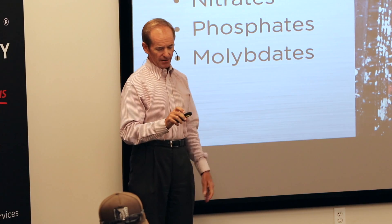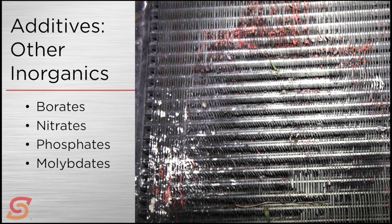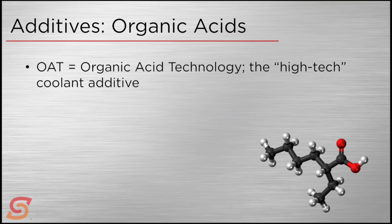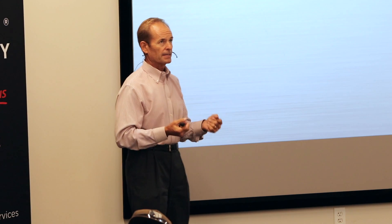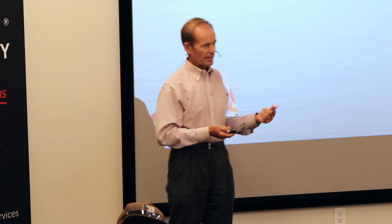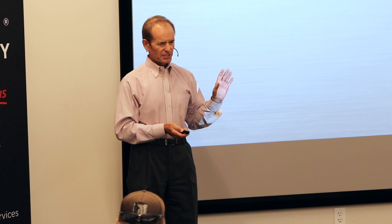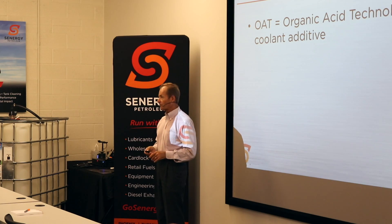The next additive category is organic acids — OAT, short for Organic Acid Technology. OAT is used in antifreezes also referred to as Extended Life Coolants or ELCs, so ELCs and OATs are synonymous. It's the high-tech coolant additive; they've been around a couple of decades, which in the antifreeze world is just the other day, but it's definitely different from conventional products.